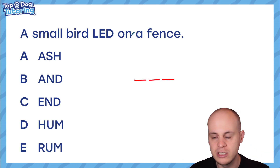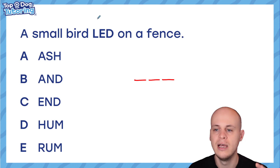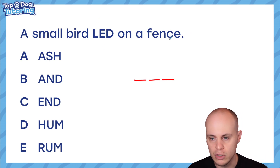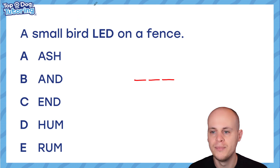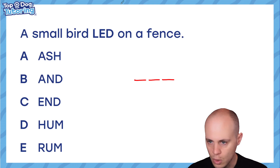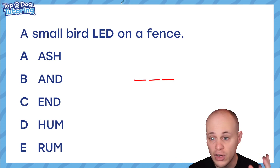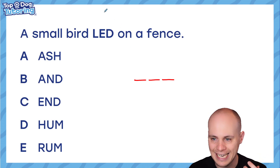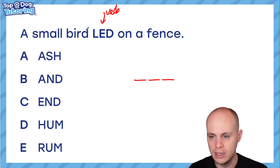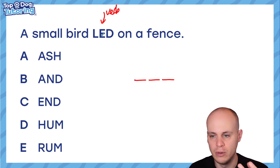My first top tip: once you've read the sentence and got the context in your mind — a small bird something on a fence — think to yourself, what kind of word is this? Is this an adjective? Is it a noun? Is it a verb, a doing word? I think it's very clearly going to be a verb here. A small bird on a fence — this is clearly the doing word.